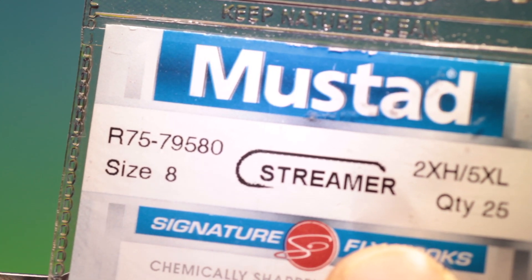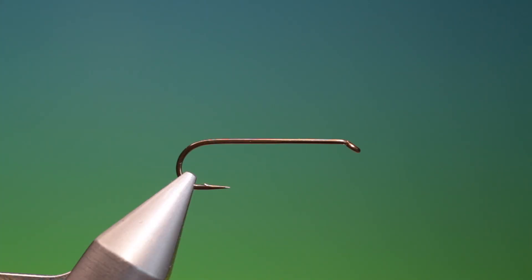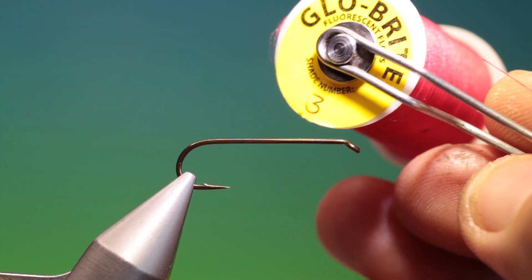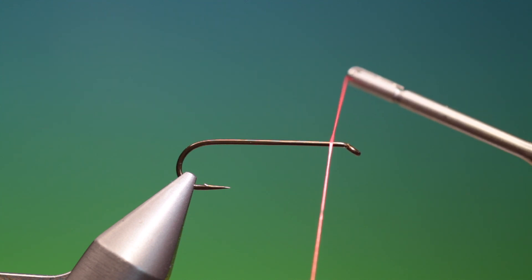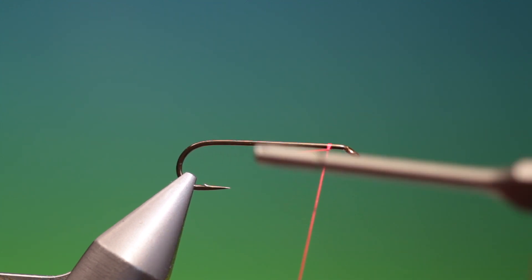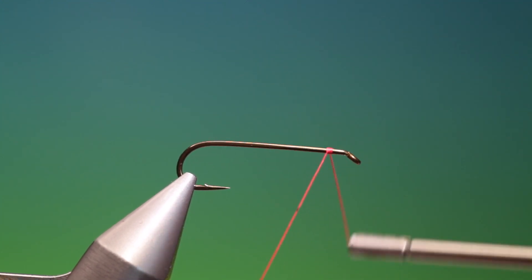We'll start with the Mustard R75 size 8 streamer hook. This is the Sinfoil Fry. We've got glow bite number three red floss and we attach this just a wee ways behind the hook eye.